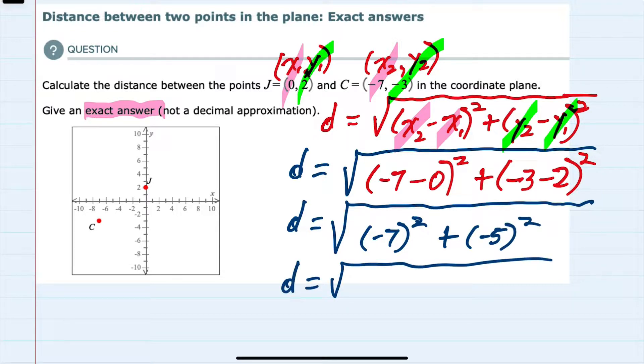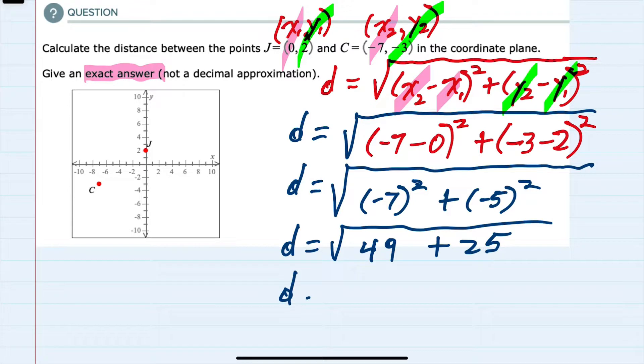We can now square each of those. Negative 7 squared is 49, negative 5 squared is 25. We can now add underneath the radical: 49 plus 25 is 74. And since this is a radical that won't simplify, this is our exact answer. The distance between these two points is the square root of 74.